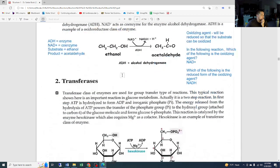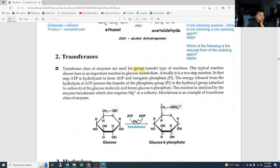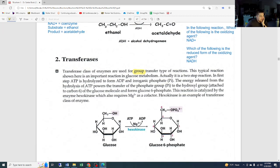Hopefully that makes a little bit more sense. Now, the transferases. A transferase class of enzyme is used for group transfer type of reactions. Remember, we're talking about groups—those functional groups like the alcohol, the OH, the amine group, the amide group, the rings, all of those functional groups. This typical reaction shown here is an important reaction in glucose metabolism—the breakdown of glucose to give us energy. It's a two-step reaction. In the first step, ATP is hydrolyzed to form ADP and inorganic phosphate.